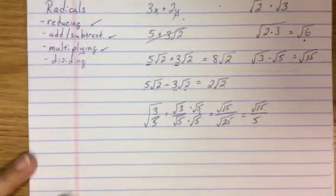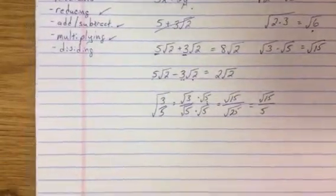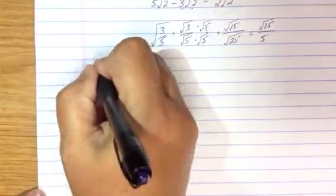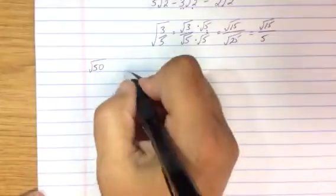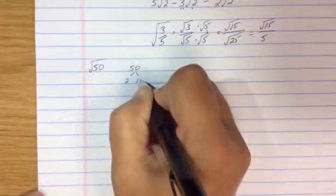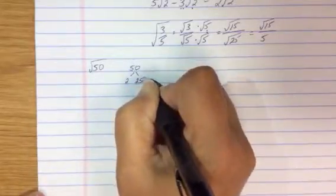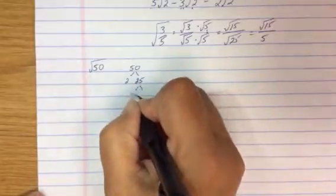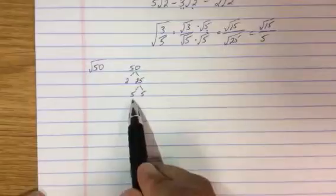Let's talk the last one and that's the biggie, and that's reducing. Now reducing can be done in two methods. The first method is done by prime factorization. That means I'm going to take the number inside and I'm going to reduce it to all its prime factors. √50. Well, 50 is the same as 2 times 25 and 25 is the same as 5 times 5. The 2, 5 and 5 are all prime factors of 50.